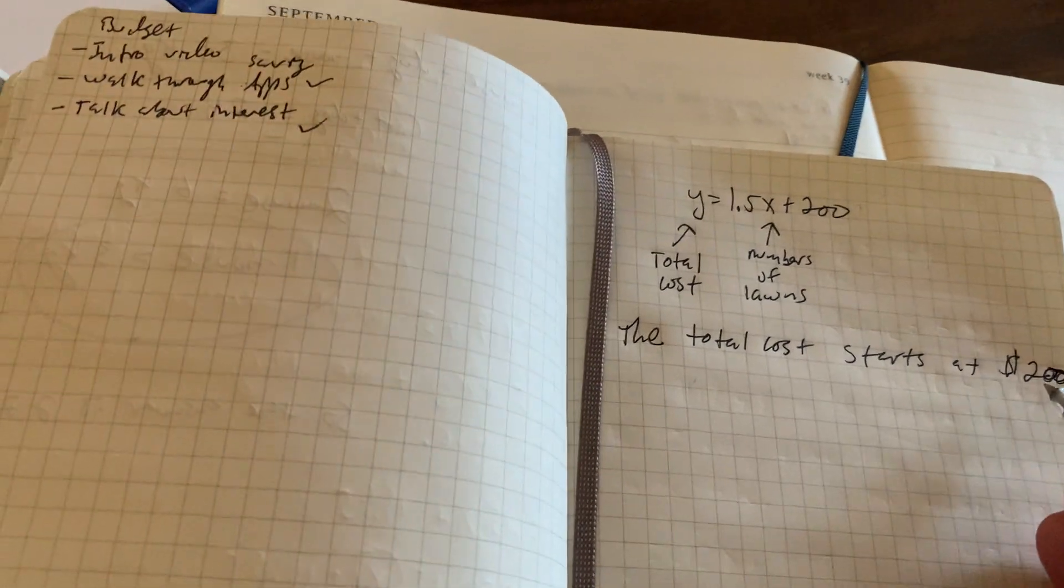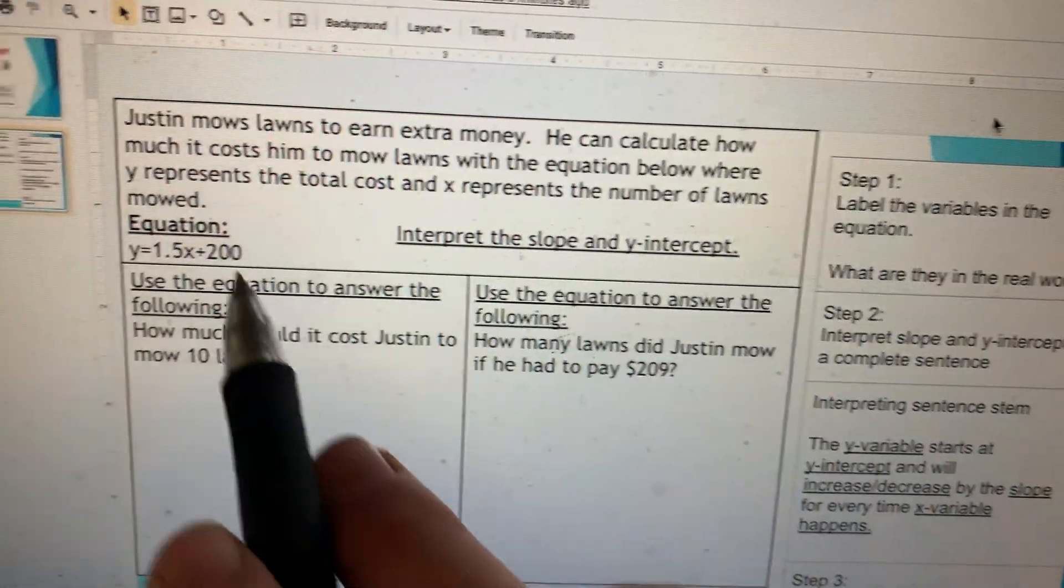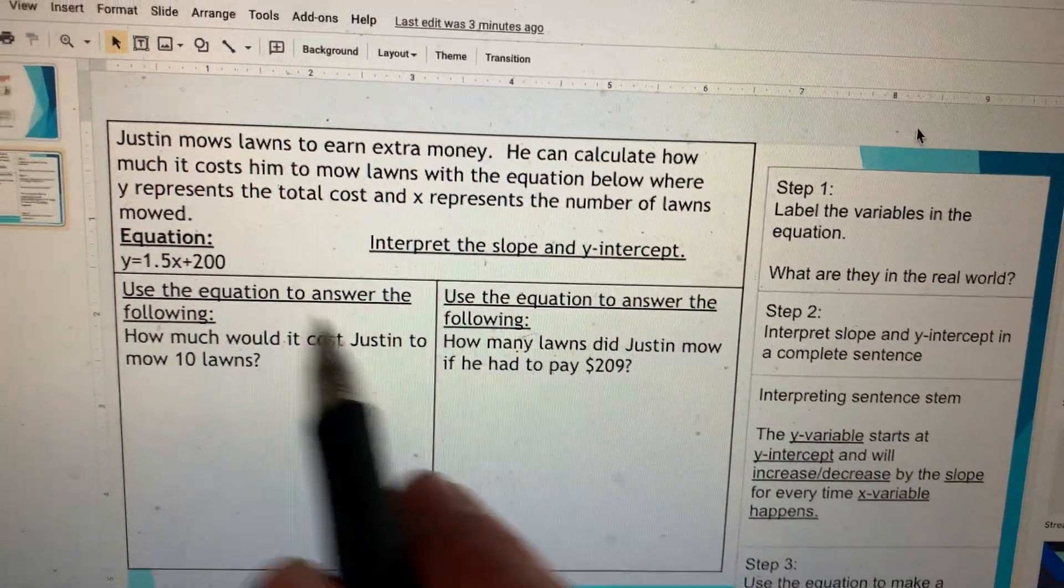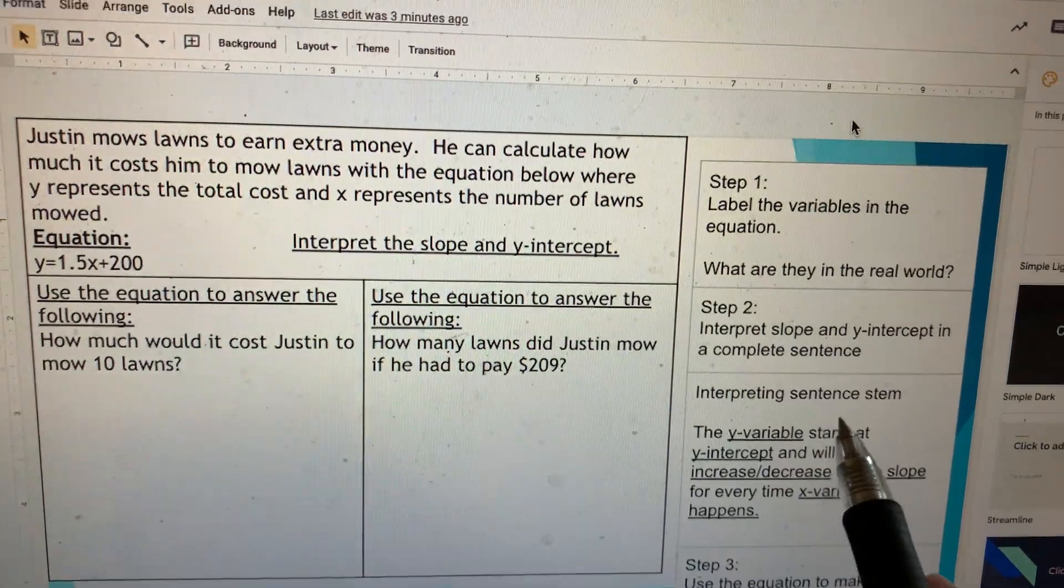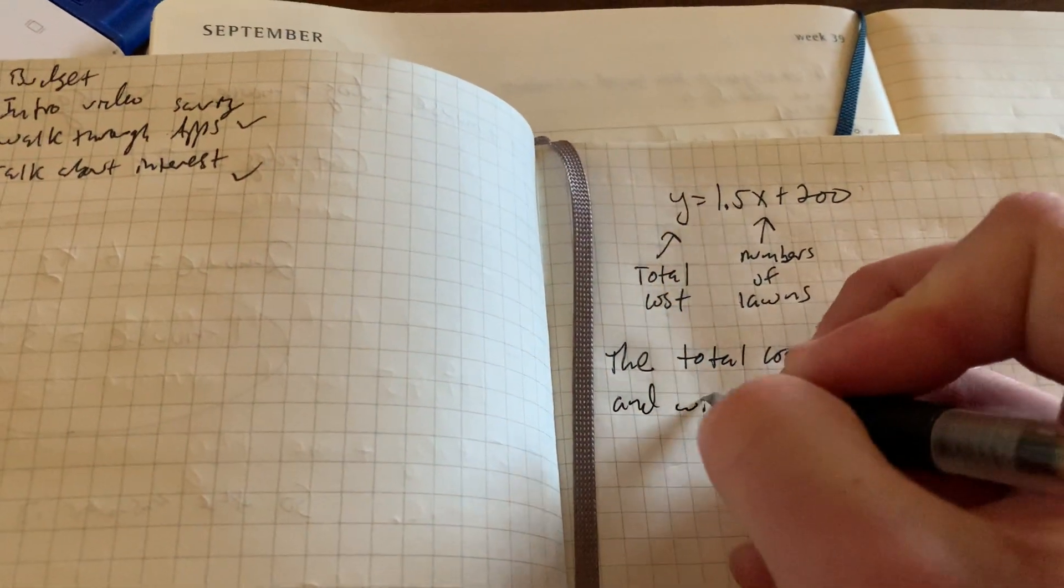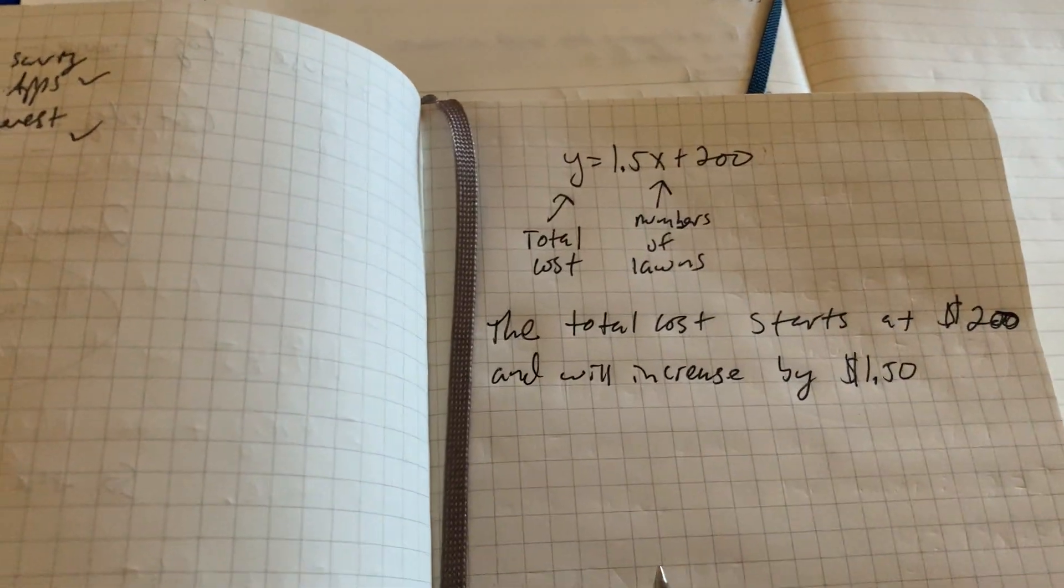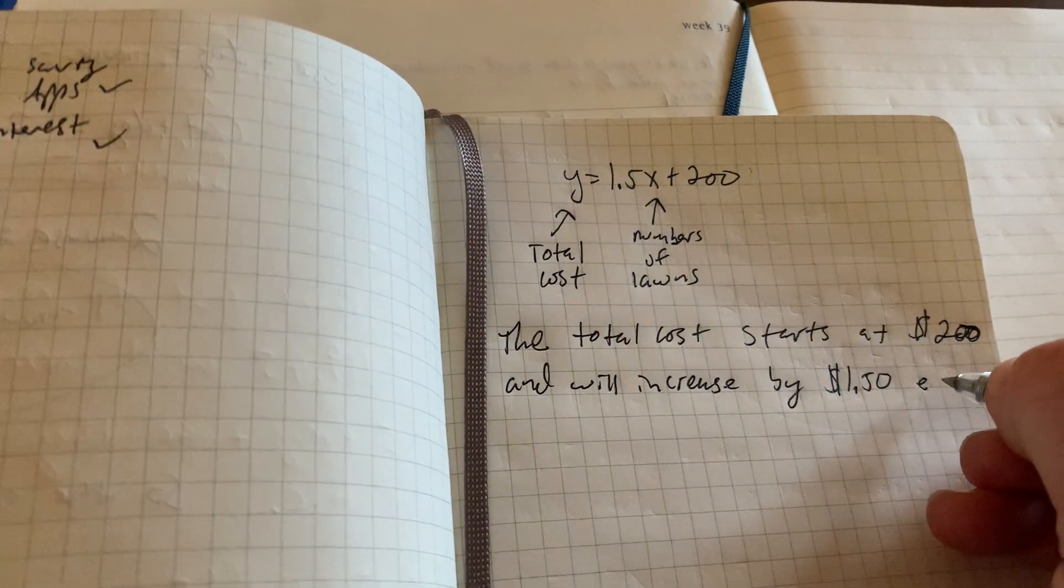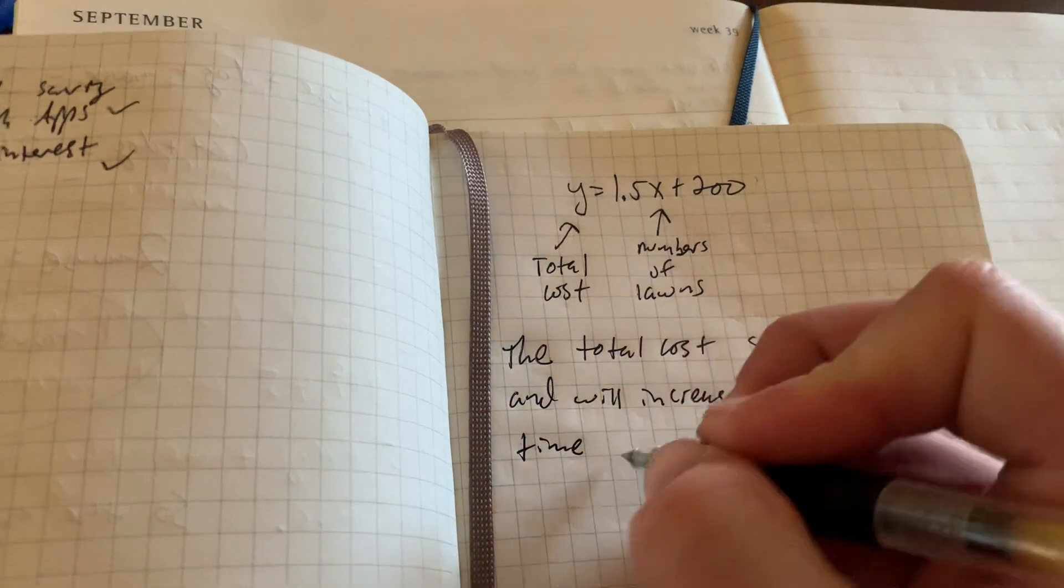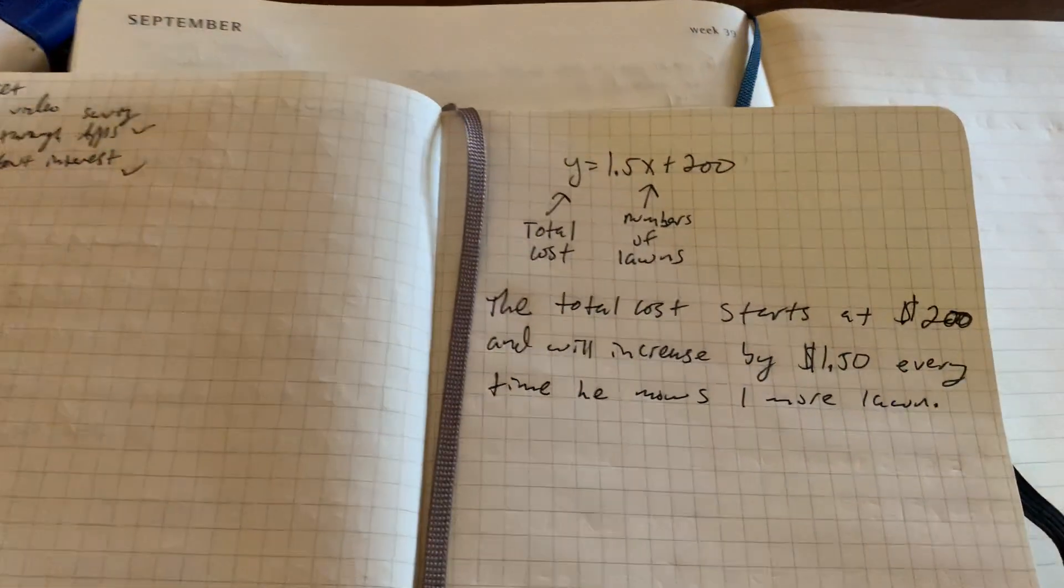So his total cost starts at $200. I imagine that starting cost could be maybe the cost of the lawnmower. And we'll increase slash decrease. Since that 1.5 with X is positive, we're going to choose increase. If that was negative 1.5X, we would say decrease. And it will increase by the slope, so it will increase by $1.50. It will increase by $1.50 for every time the X variable happens. So in this case, the X variable is the number of lawns. So it will increase by $1.50 every time he mows one more lawn. And boom. Now we're done with our interpretation sentence.